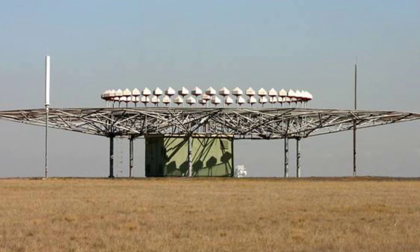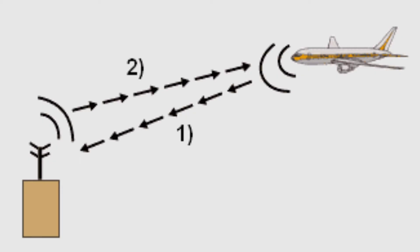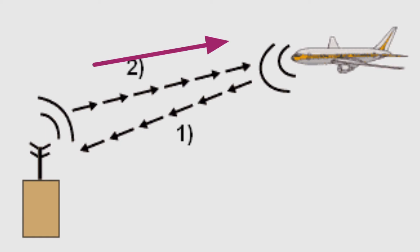A carrier signal transmitted from the aircraft is modulated with a string of interrogation pulses. The ground unit receives the pulses and returns a signal to the aircraft. This means that from the aircraft transmitter, a carrier wave signal is transmitted to the ground DME station, and then the ground DME station receives those pulses and returns the signal to the aircraft.